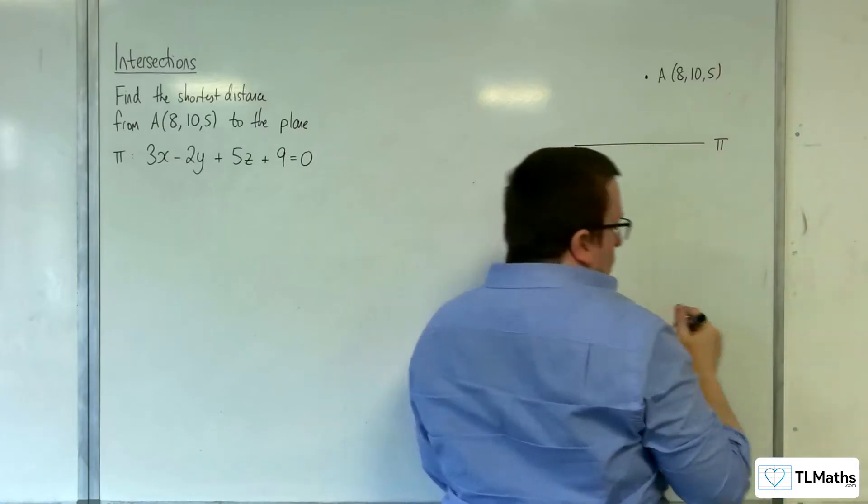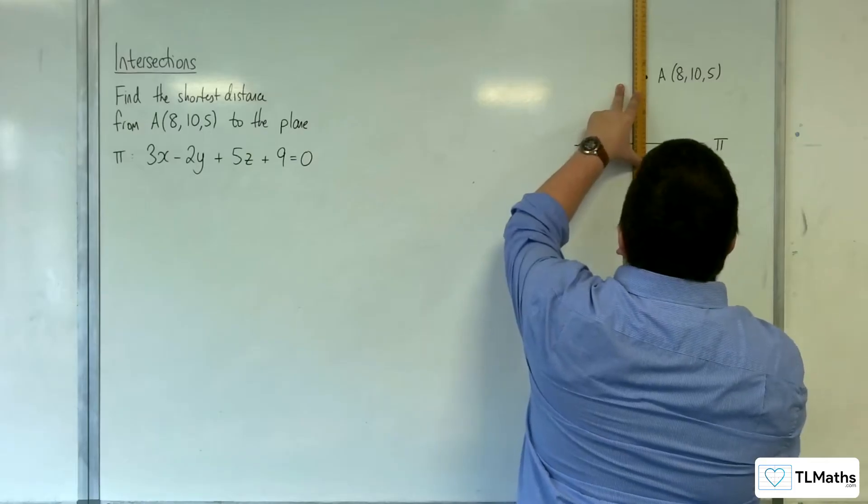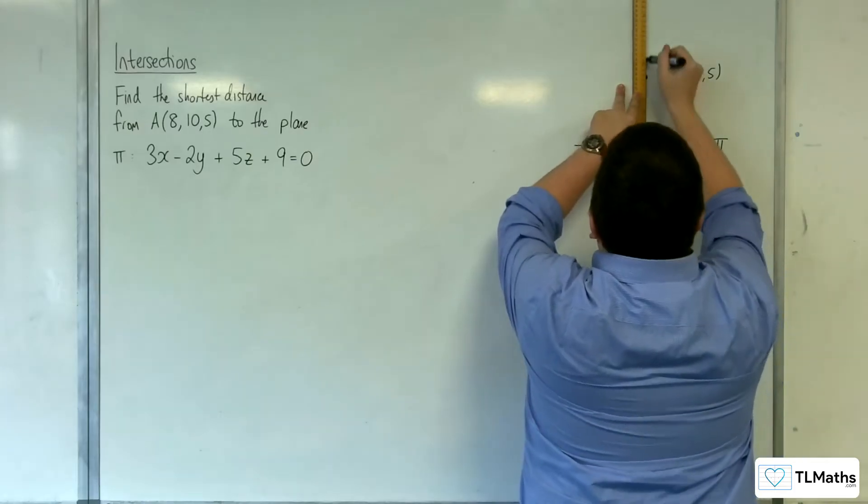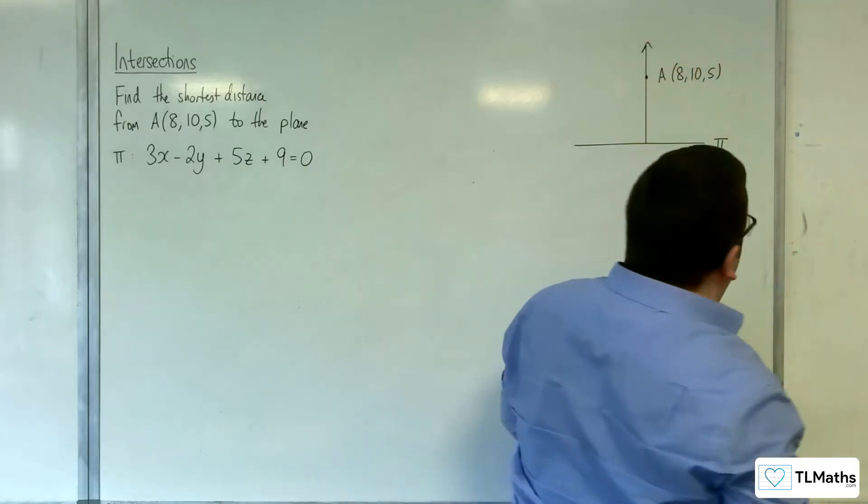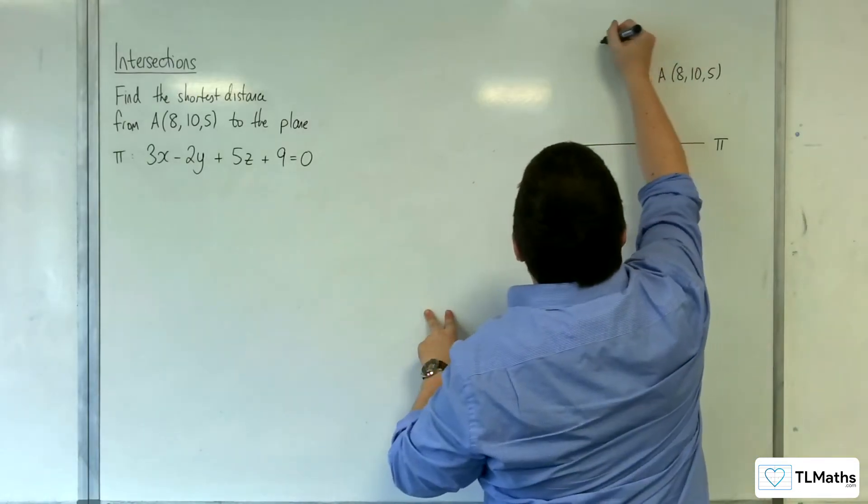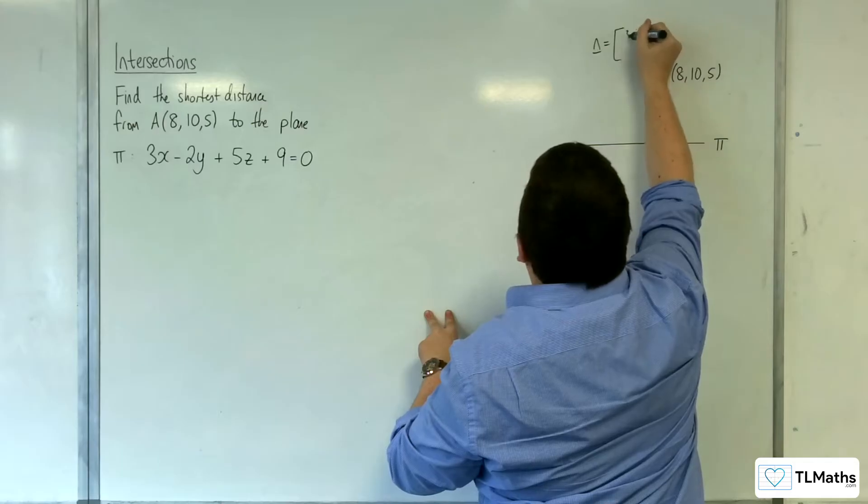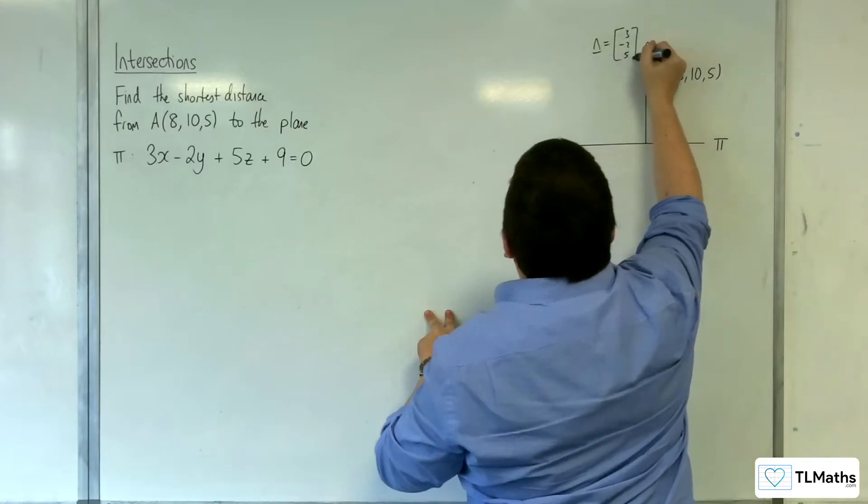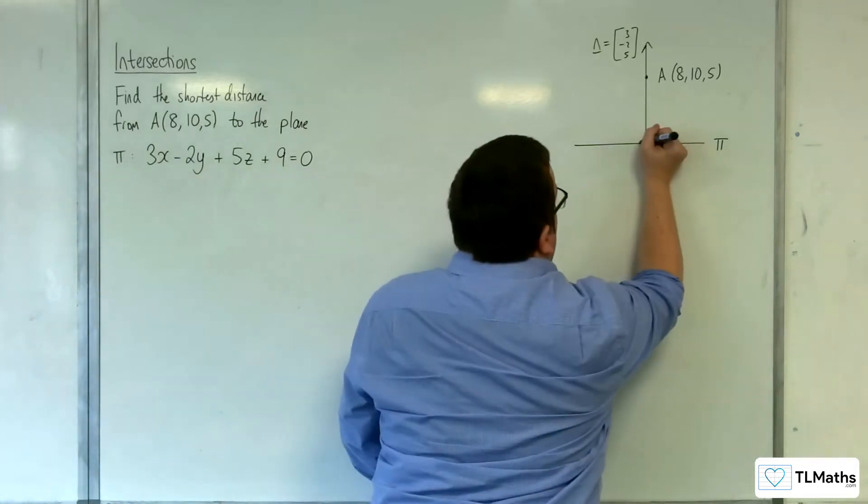Now we know that the plane pi has a normal vector, and we know what the normal vector is. It's (3, -2, 5). So the normal vector is (3, -2, 5), which makes a right angle with the plane.